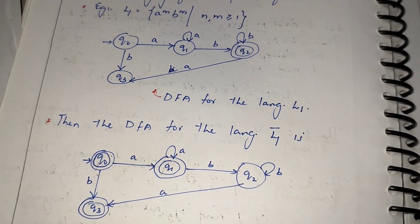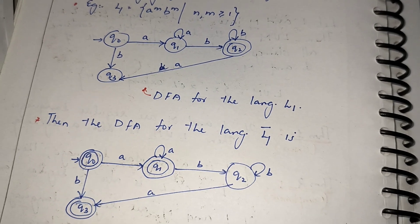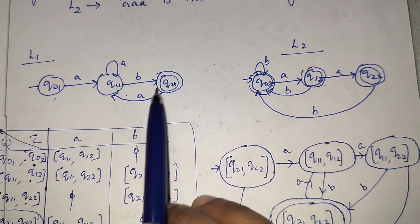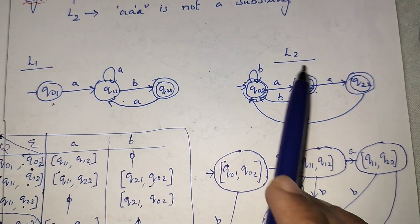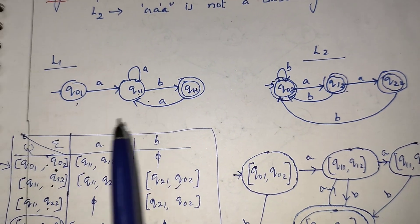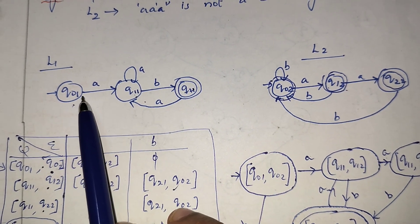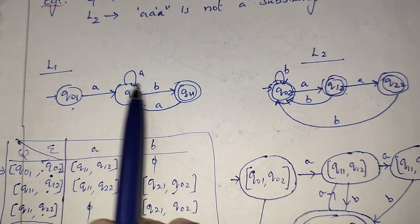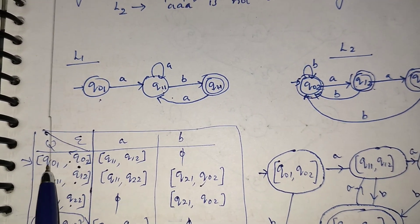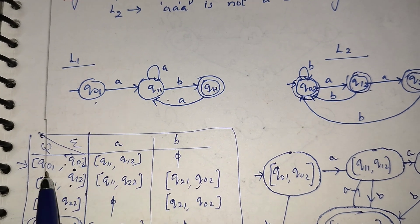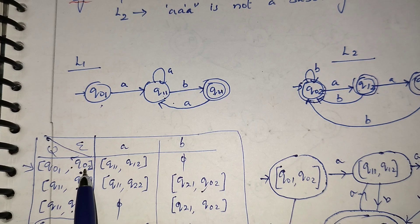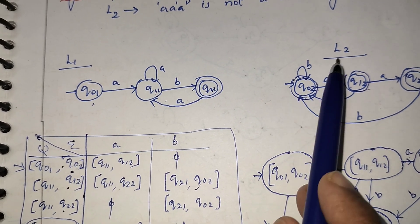For the intersection of two regular languages, if I take two regular languages, the intersection is also a regular language. Here is a DFA for language L1 and a DFA for language L2. Q01 is the starting state of DFA1 and Q02 is the starting state of DFA2. So Q01 on A goes to Q11, and Q02 on A goes to Q12.